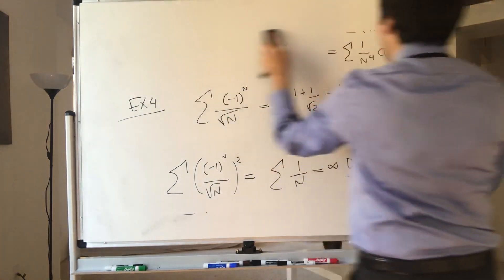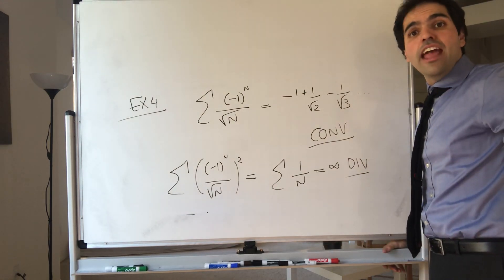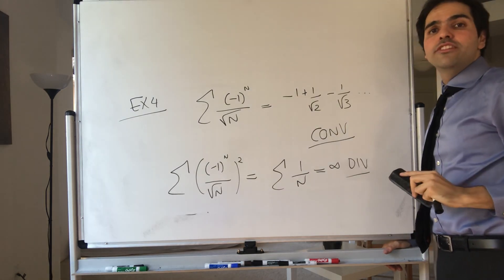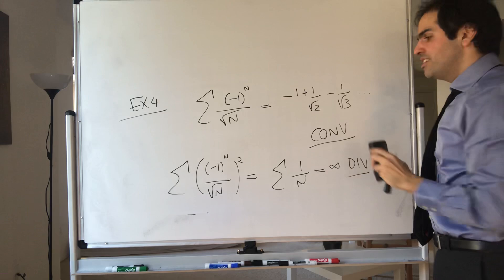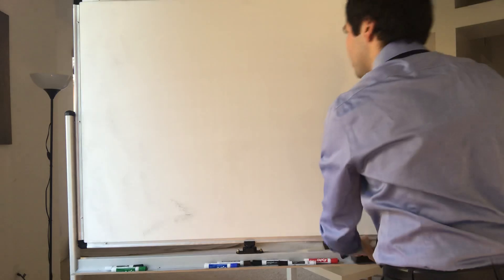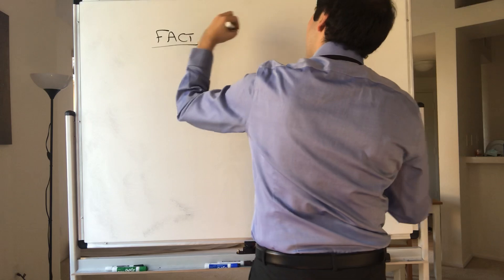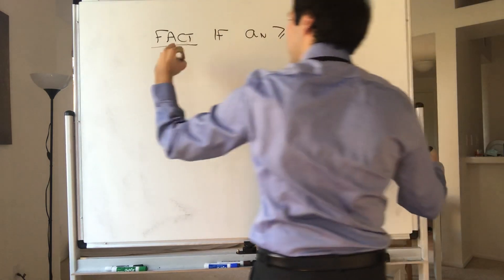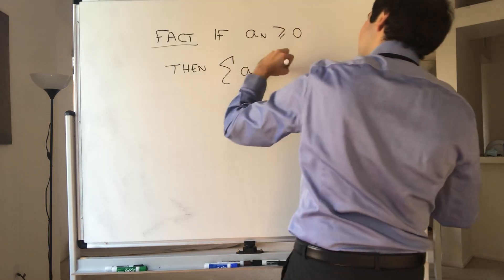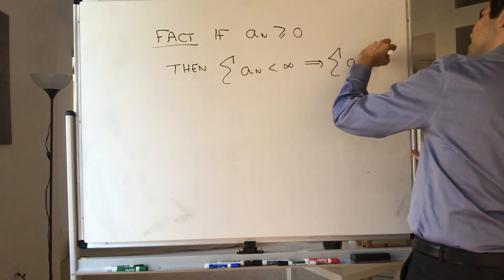So here's what I want to show. If the aₙ itself is positive, then actually if you know the series of aₙ converges, then the series of aₙ squared converges. So fact: if aₙ is greater or equal to zero, then the sum of aₙ is finite implies the sum of aₙ squared is finite.